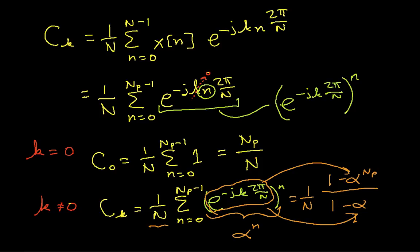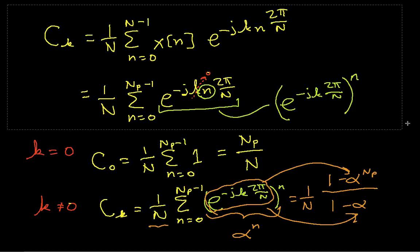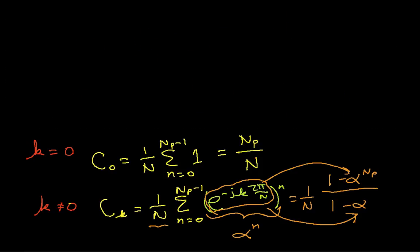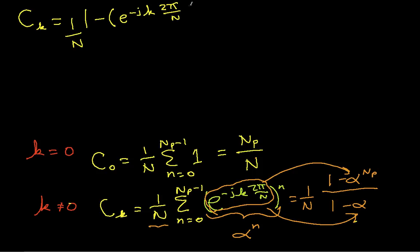So C_k is 1 over N, times (1 minus e to the minus j k 2π over N raised to the N_p power) divided by (1 minus e to the minus j k 2π over N). Now I'm going to apply a trick. I'll treat the 1 in the numerator and denominator as e to the 0, then split the difference on the exponent between e to the 0 and e to the minus j k 2π over N, factor that out, and then the remaining term can be turned into a sine.